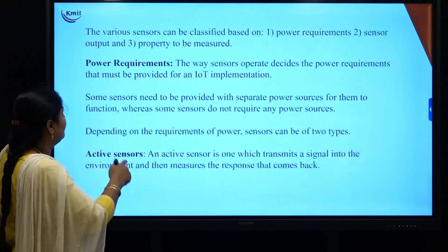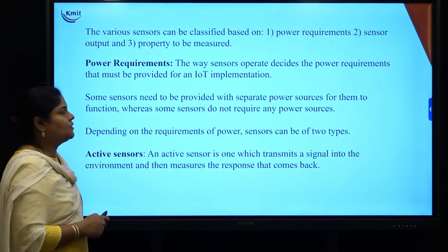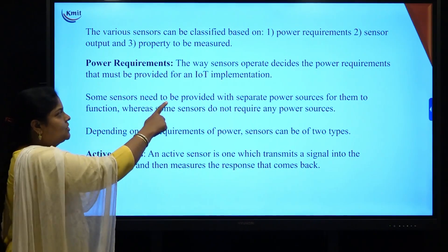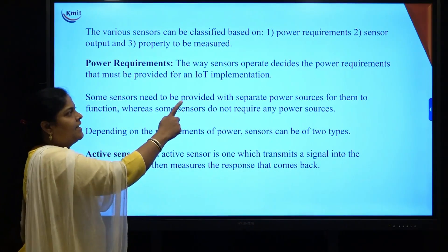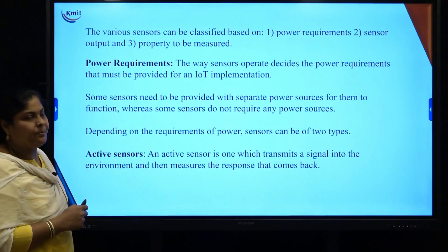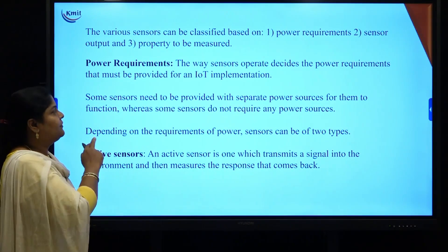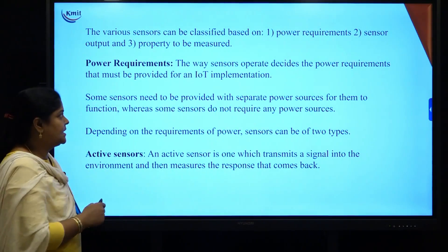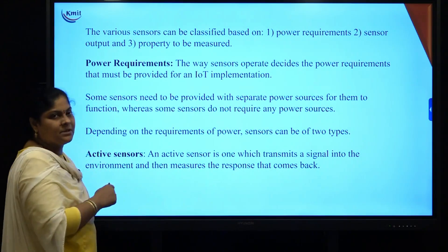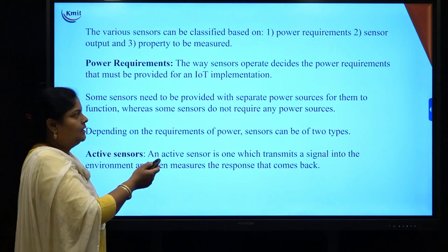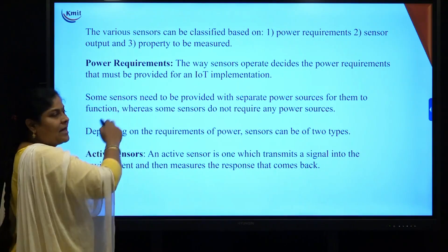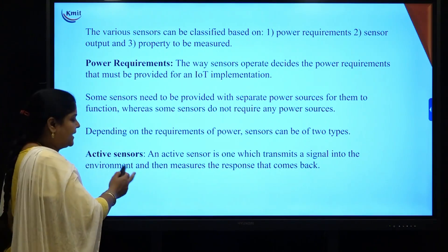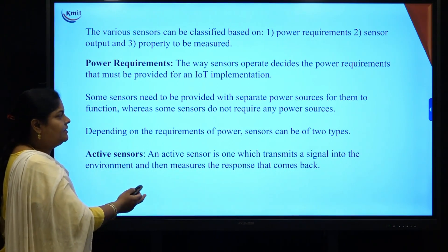Next, we will see the various types of sensors. Sensors are classified based on three parameters: power requirements, sensor output, and measured property. First, power requirements — how the sensor is operating determines its power requirements. Based on power requirements, sensors are divided into active sensors and passive sensors.